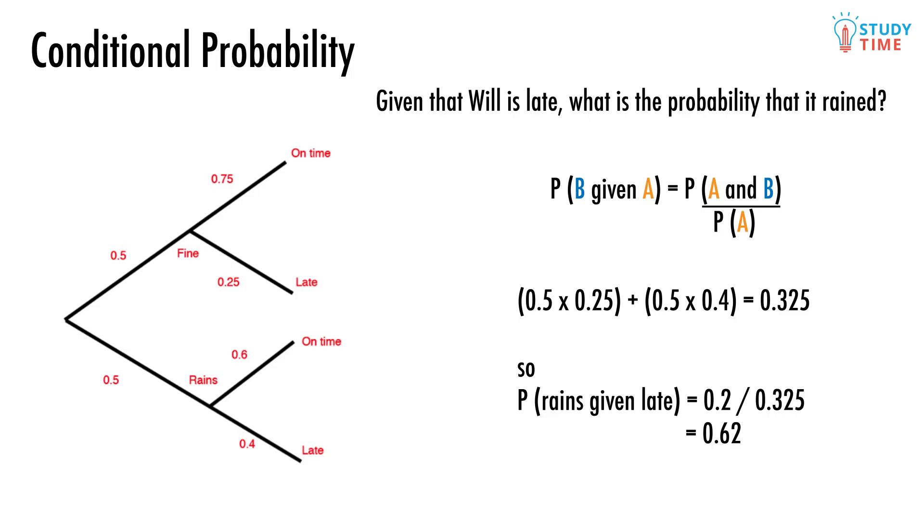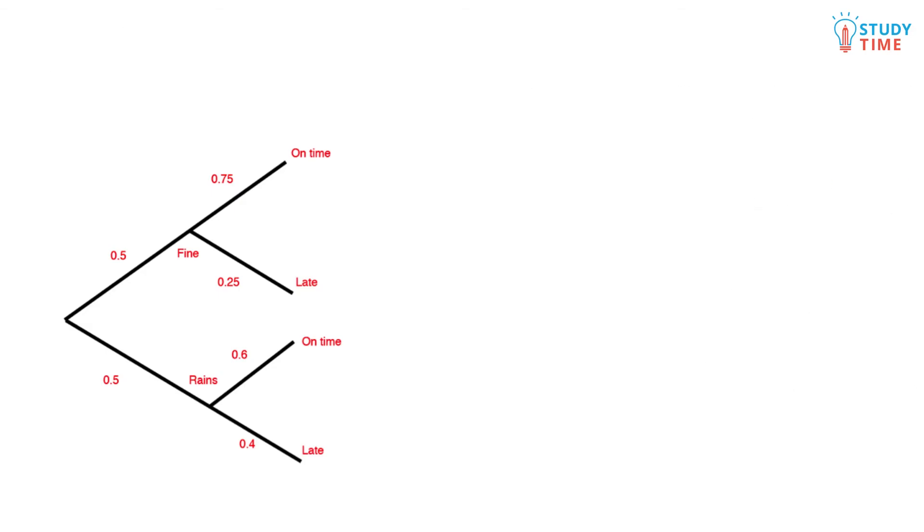If we also get given another piece of information, for example if we know how many days each month Will has lectures and we know the probability that he's late to a lecture, we can figure out exactly how many days he'll be late to. When we use a probability in this way, it's called an expected value. What we're doing is figuring out how many days we'd expect Will to be late on.